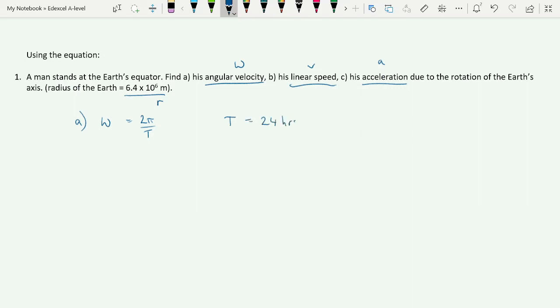And of course, that's not a unit that we can use here, so we have to turn that into seconds. 24 times 60 times 60, which gives us 86,400 seconds. Now we can put that into our equation, 2 pi over 86,400. That gives us 7.27 times 10 to the minus 5 radians per second.